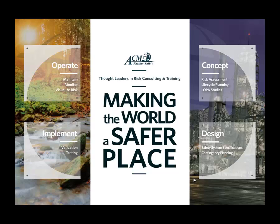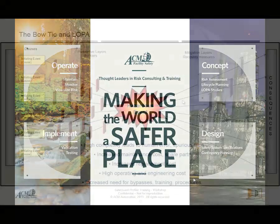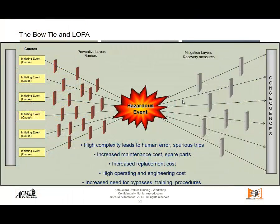Now we have all the scenarios that were picked in the hazard study, so we can create our layer protection scenario — what we're going to call our LOPA scenario. We can regroup these according to the severity of the consequence of those scenarios, and then we can see the hazard and the explanation or description of that hazard.